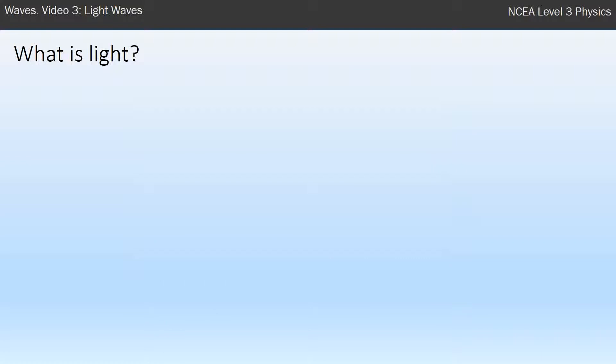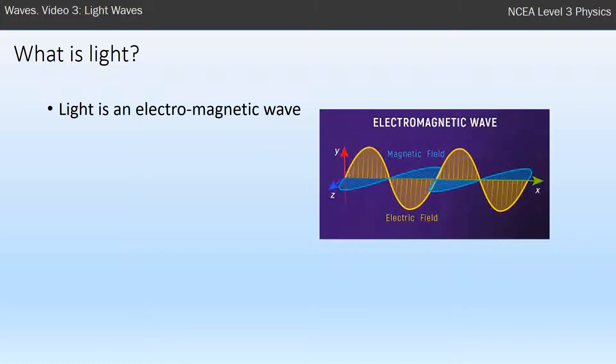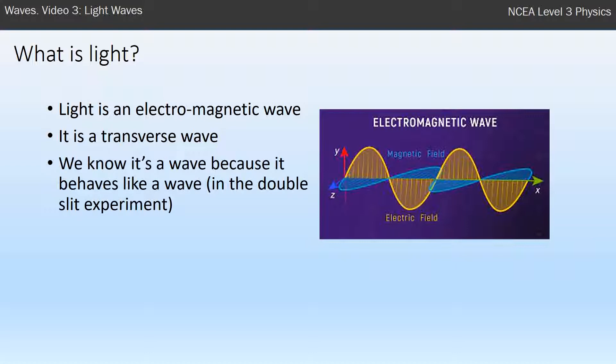So what is light? Well, it turns out that we now know that light is electromagnetism. It's a wave of electromagnetism. It's a transverse wave as opposed to sound which is a longitudinal wave. Light is a transverse wave and we know that it's a wave because it behaves like a wave.